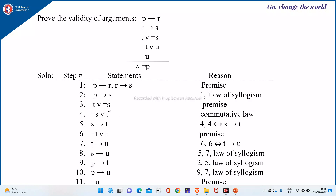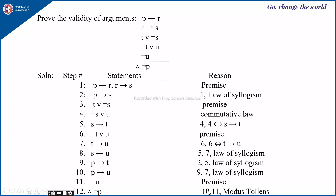Using step 2 and step 5 — that is P implies S and S implies T — and the law of syllogism, we arrive at P implies T. Then using P implies T and T implies U and syllogism, we arrive at P implies U. We have one more premise, not of U. Using not of U, P implies U, and the law of modus tollens, since not of U is true and P implies U is true, not of P must also be true.